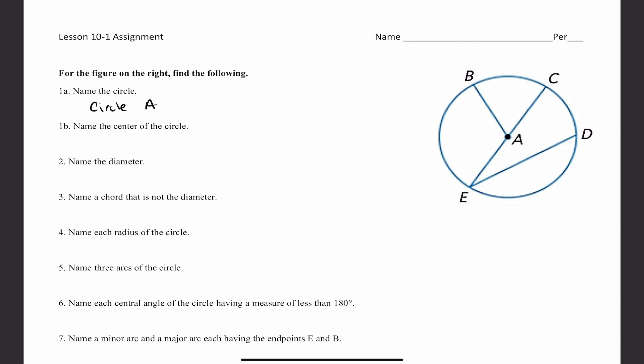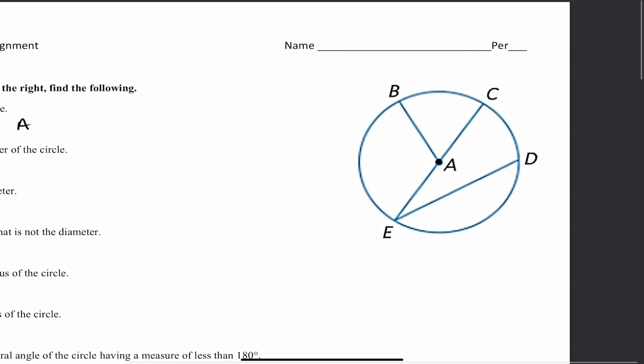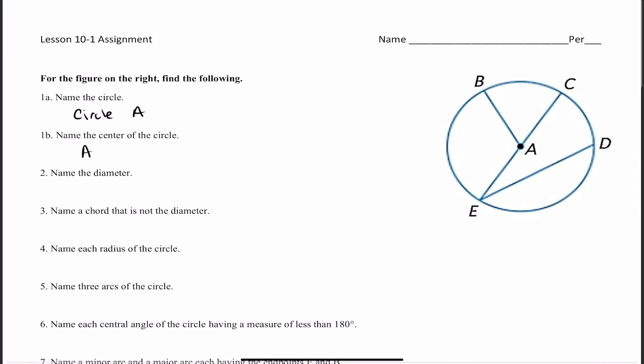1B: name the center of the circle, which we already figured out — it's that center point. It's A. To name a point, you need to have a capital letter, or just call it Point A. So it's capital letter A, or Point A.